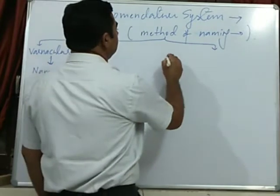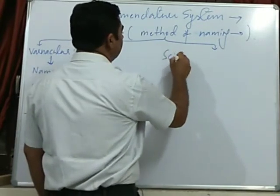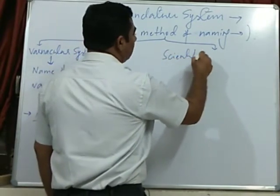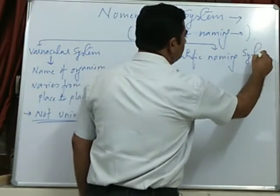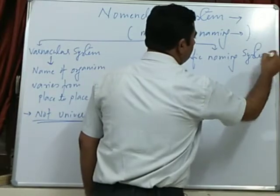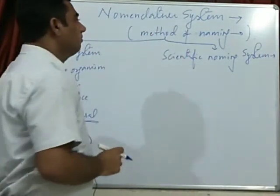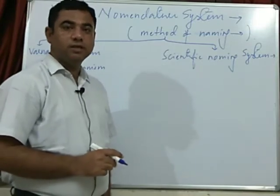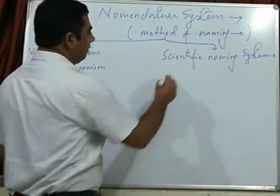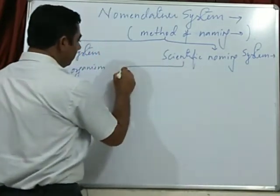Universal names are biological names. They are said to be scientific naming system which are universal and follow certain rules.